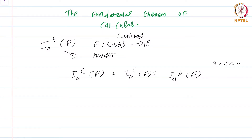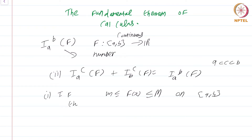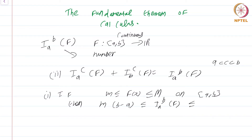That was the second property. The first property was that if m ≤ f(x) ≤ M on the closed interval [a,b], then m(b−a) ≤ i_{a,b}(f) ≤ M(b−a).